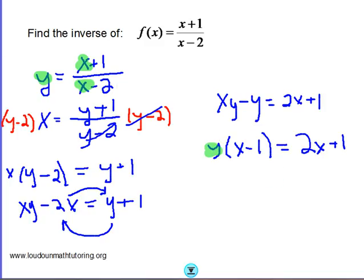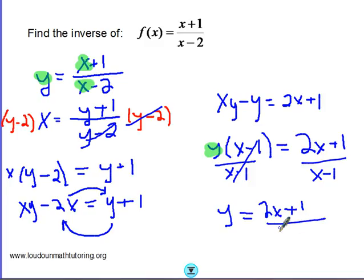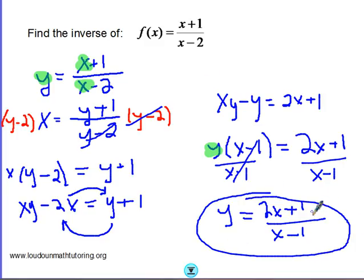y is multiplied by x minus 1, so we get rid of the x minus 1. We're going to divide both sides by x minus 1. So we get y equals 2x plus 1 over x minus 1. The inverse of this rational function is also a rational function.